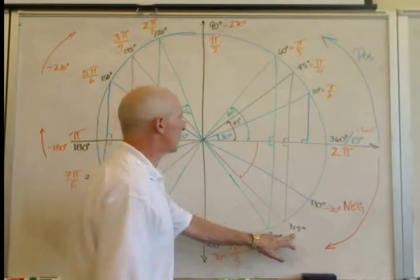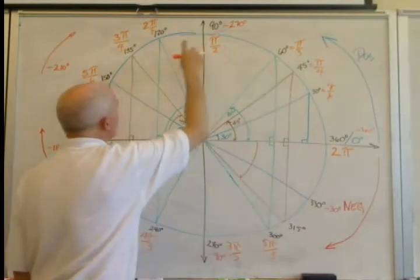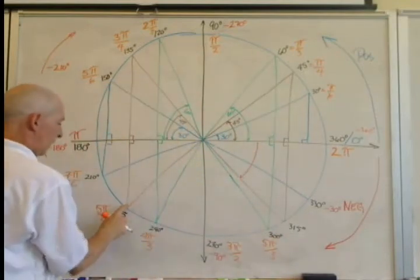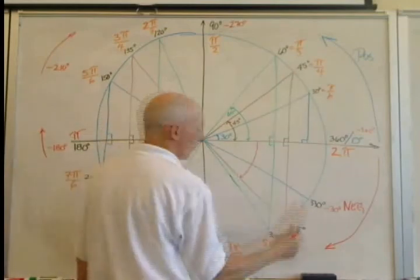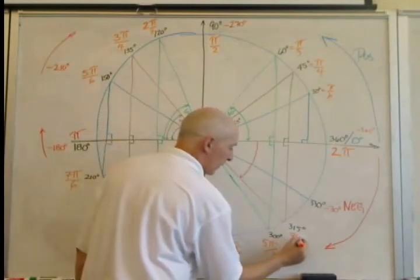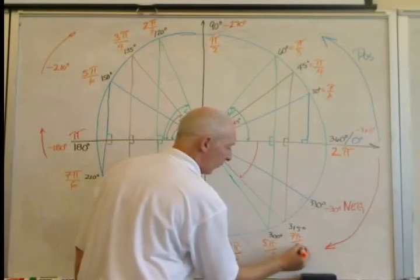315 degrees, let's see, 1, 2, 3, 4, 5, 6, 7 of the pi over 4. 7 pi over 4.